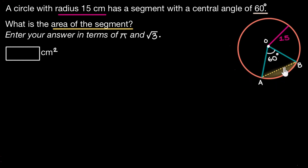We have a circle over here and the radius of this circle is given to us as 15 cm. And also this circle has a segment over here, we have this yellow shaded region which is bounded by a chord AB and this arc of our circle.